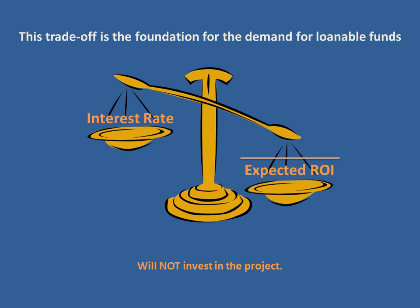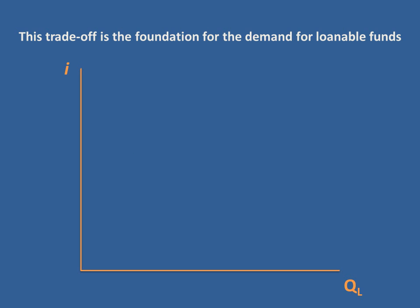This shows us that the relationship between the interest rate and the number of firms taking on additional projects — which we represent as the quantity of loanable funds demanded in society — is a negative relationship. Remember, a graph is just a relationship between two variables. Here we place the nominal interest rate on the y-axis and the quantity of loanable funds on the x-axis, and the demand side relationship is negative.